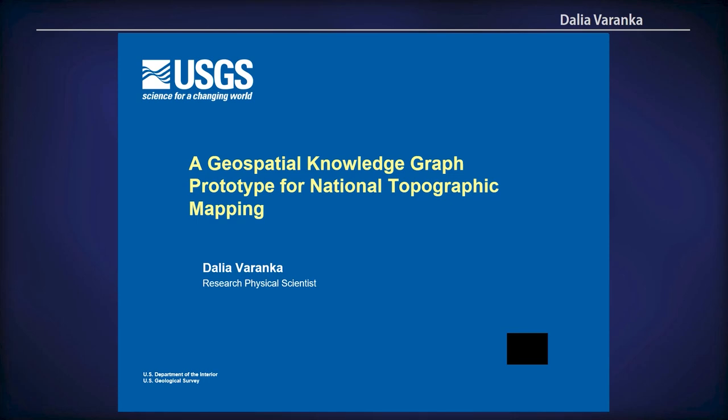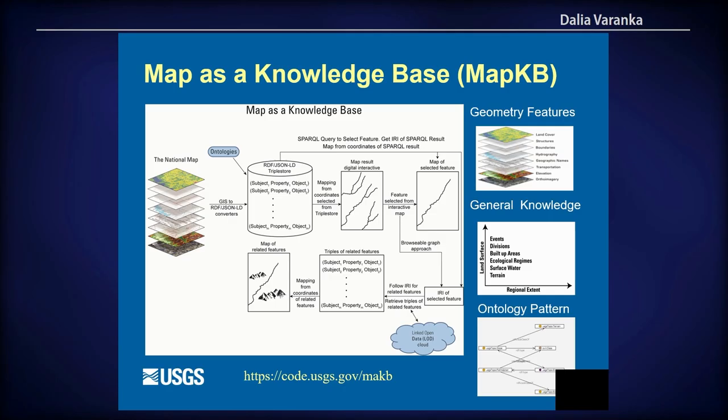Hello, I'm Dahlia Varonca. The Prototype Geospatial Knowledge Graph, called MapKB, aims to capture semantic specifications of feature instances, classes, attributes, and properties.